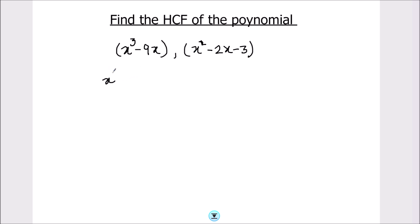So let's start by finding the factors of the two polynomials separately. First we have x³ - 9x. From this polynomial we can take x common, then we'll have x² - 9.